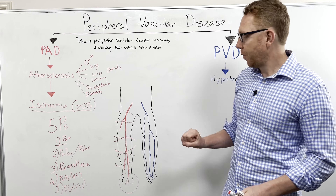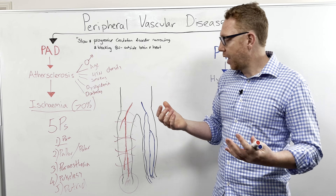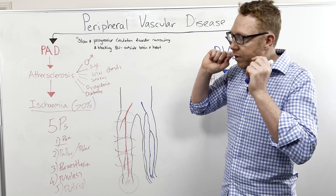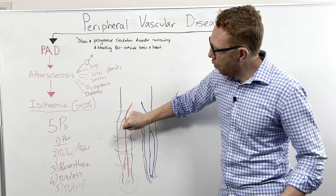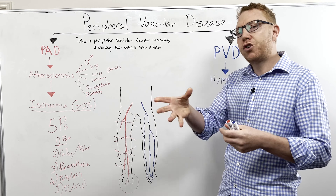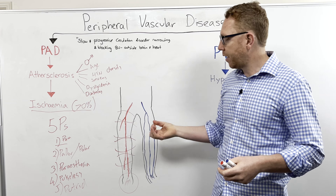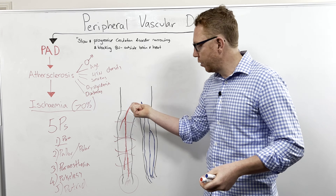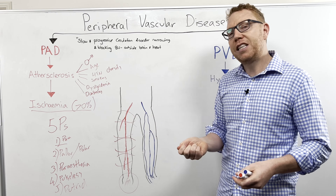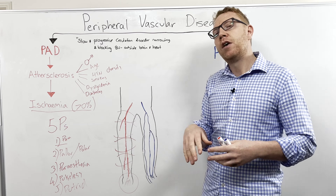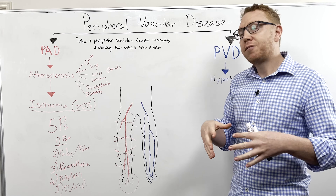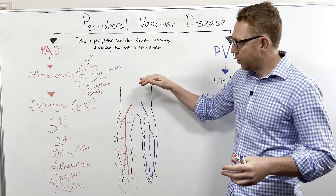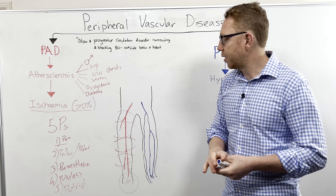How do we diagnose PAD? You would do a physical exam and patient history. Part of the physical exam may involve auscultation — listening with a stethoscope over the occluded artery you might hear a whooshing sound called a bruit, indicating occluded blood flow. You could also do a Doppler ultrasound to see the blood vessels and changes in blood flow patterns, or vascular imaging using contrast dyes to visualize flow through the blood vessels.